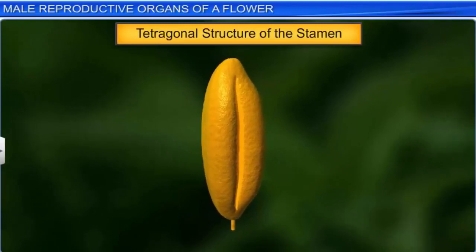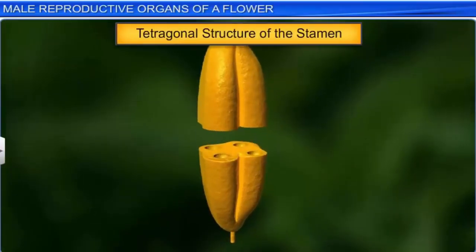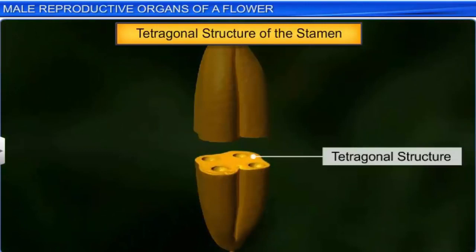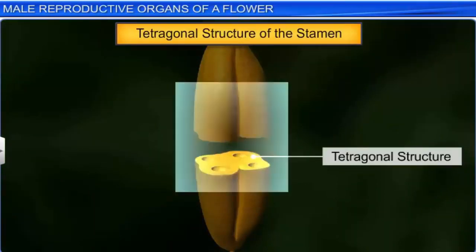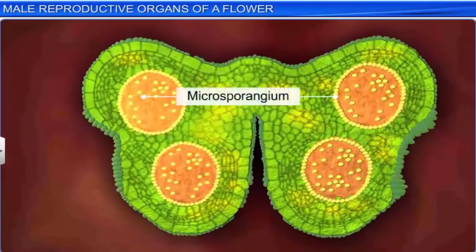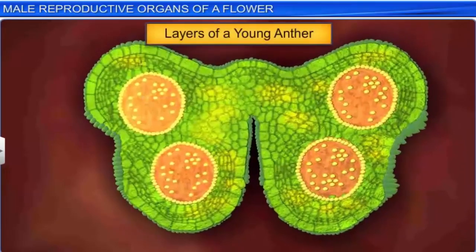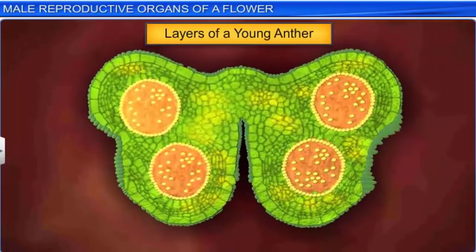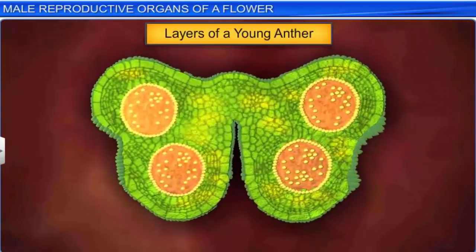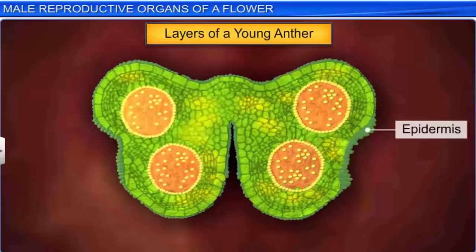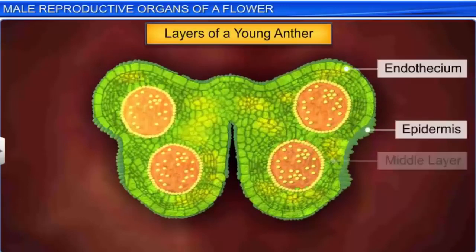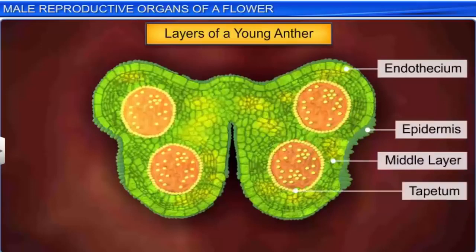The transverse section of the anther reveals that its lobes form a four-sided or tetragonal structure. In the corner of each lobe is the microsporangium, a sac-like structure which is nearly circular in outline. In a young anther, the microsporangium is surrounded by a multilayered wall consisting of the epidermis, endothecium, middle layers, and the tapetum — the innermost layer — while the center is occupied by sporogenous tissue.